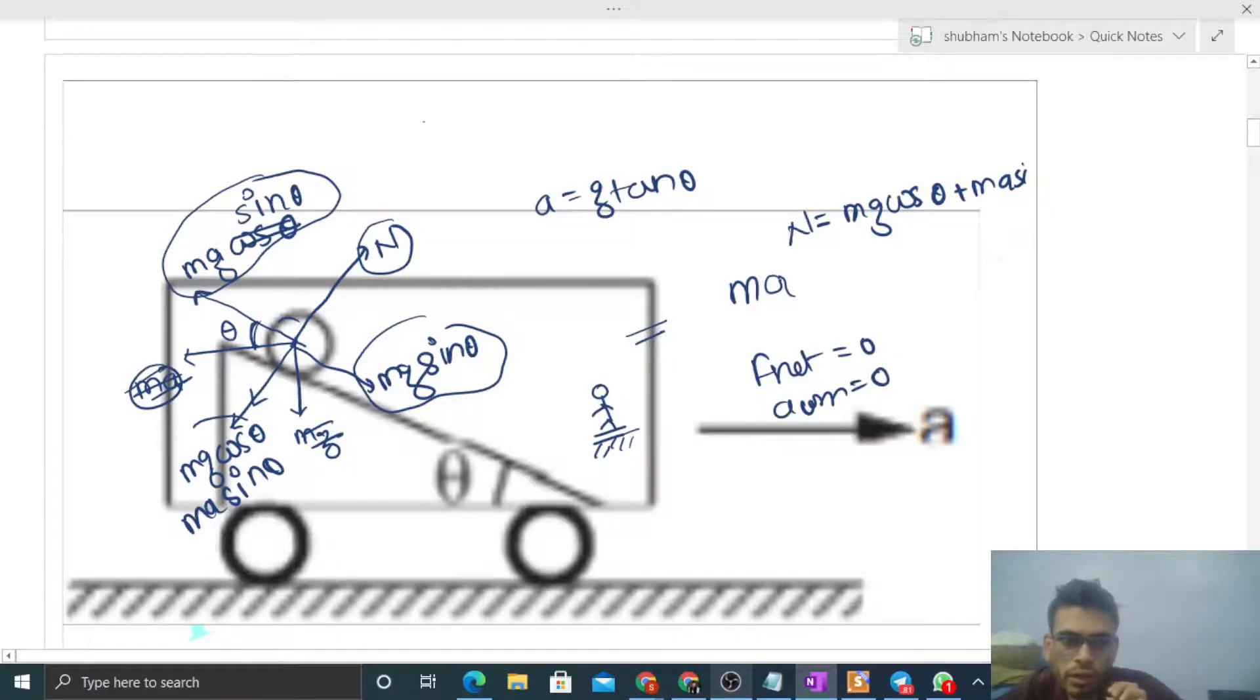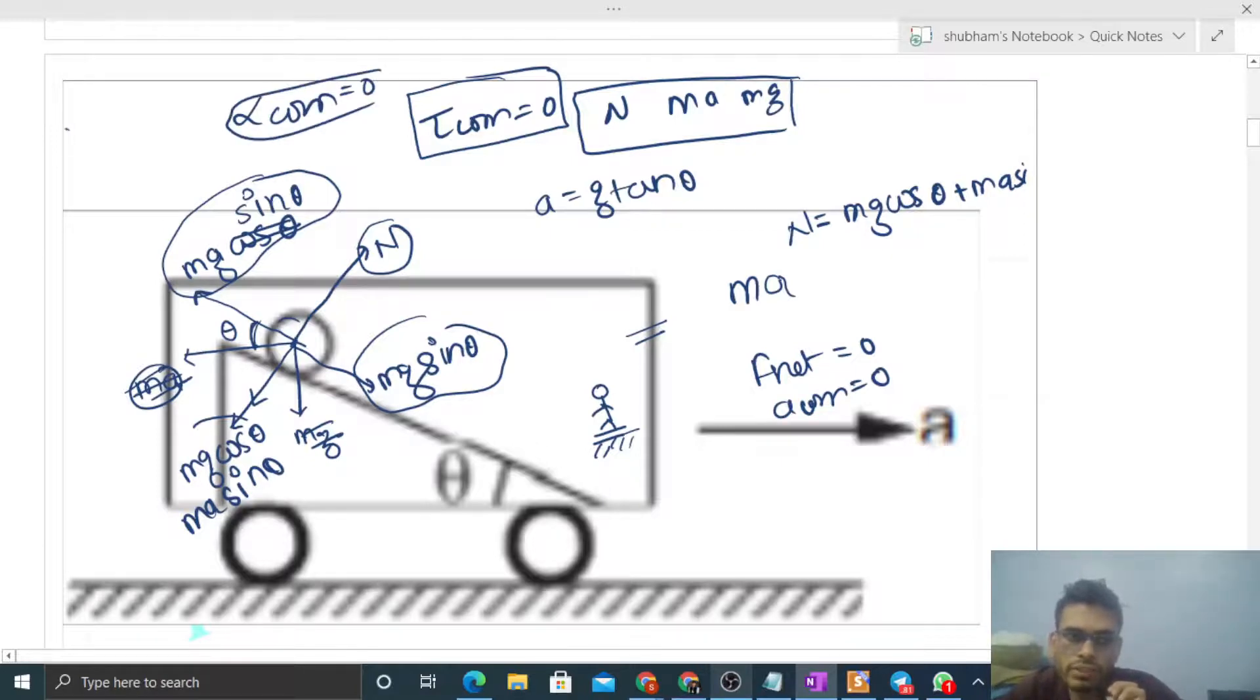Now check the torque about center of mass. Torque is zero because normal reaction, ma, and mg—all three forces pass through the center of mass. So torque about center of mass will be zero. It means alpha of center of mass will be zero.